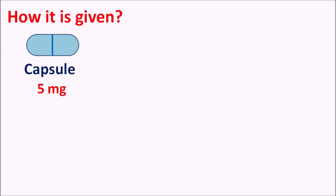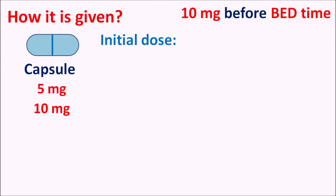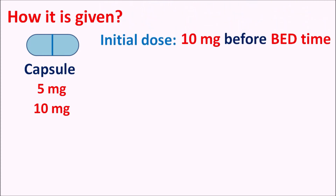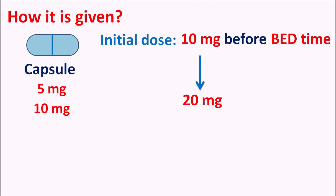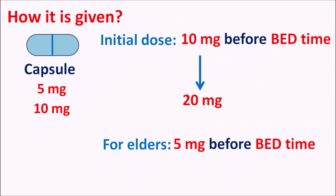How is it given? Zaleplon is available as a capsule at a strength of 5 mg as well as 10 mg. The initial dose is 10 mg given before bedtime or just after getting into bed in patients who have difficulty sleeping. The dose can be increased up to 20 mg based on the efficacy of the drug, so the maximum dose is 20 mg given before bedtime. In elderly patients or patients with renal or hepatic dysfunction, the dose should be reduced — given at 5 mg before bedtime — and the maximum dose in such patients is only 10 mg.